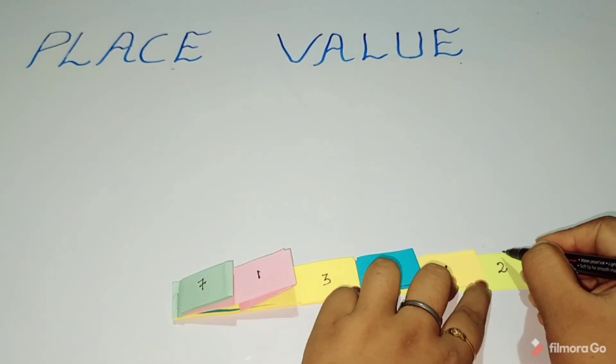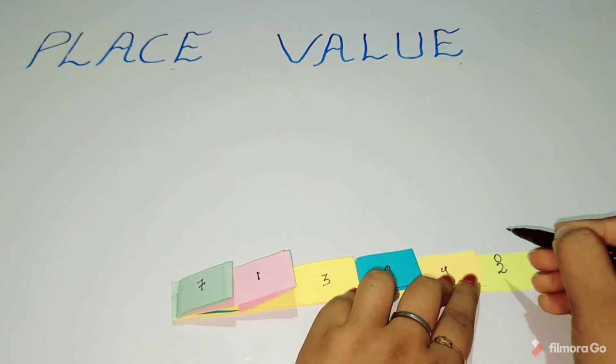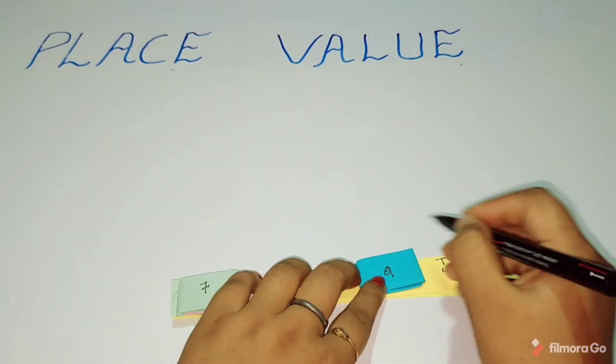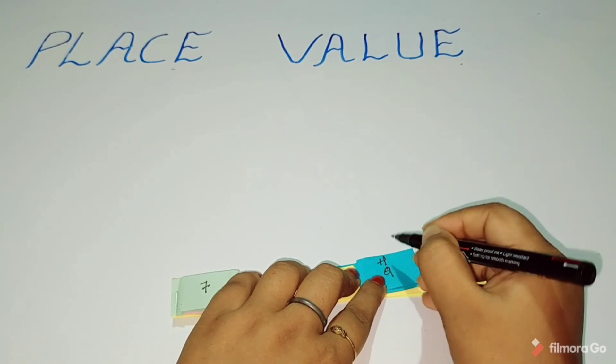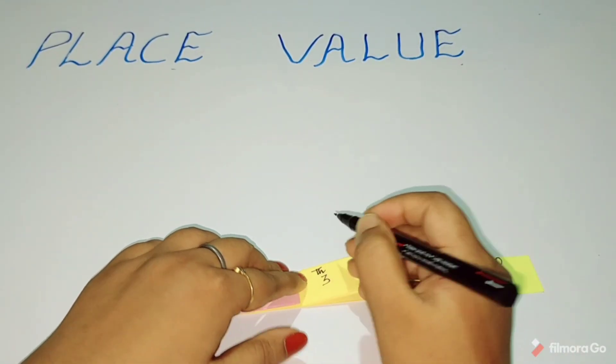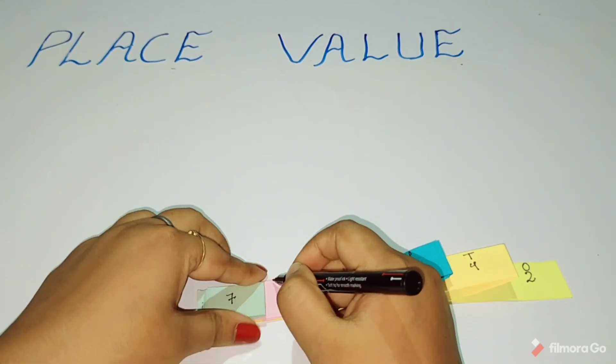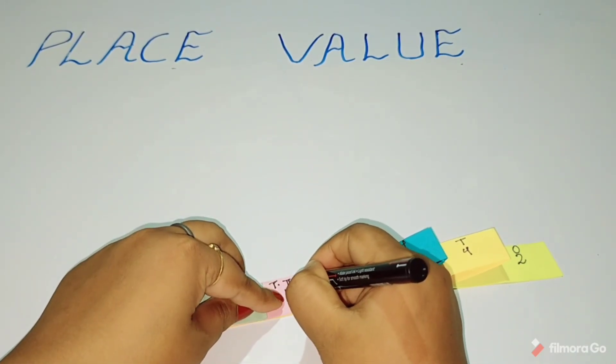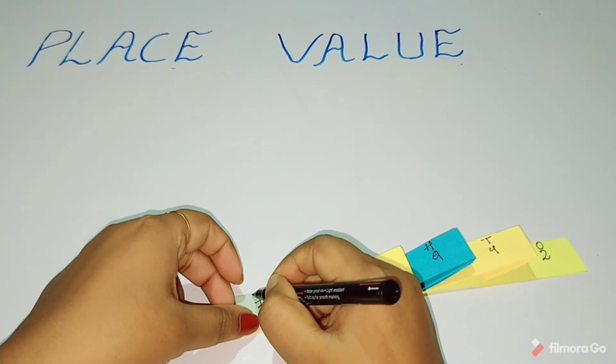In this number, this is your ones place, this is your tens place, this is your hundreds place, this is your thousands place, this is your ten thousands place, and this is your lakhs place.